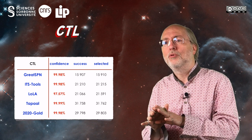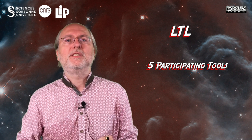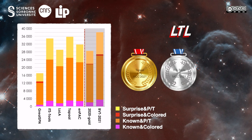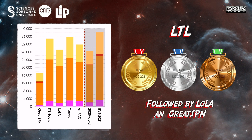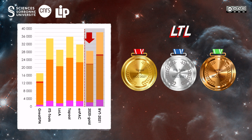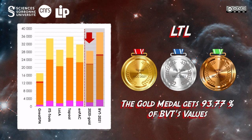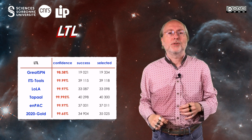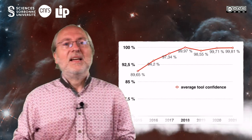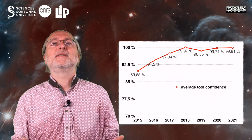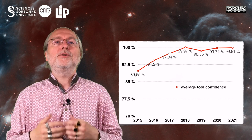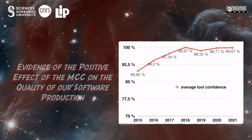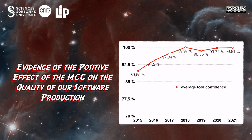For the LTL family of examinations, five tools did participate. The gold medal goes to TAPAL for its first participation in this examination. Then ITS-Tools grabs the silver one, and LPAQ gets the bronze medal, followed by Lola and GreatSPN. The 2020 gold medal was an ITS-Lola hybrid — made of the front end of ITS-Tools and the back end of Lola — and would have been out of the podium. No tool competing this year reached 100%; however, most of them are over 99%. Looking at the chart of average confidence rate since this metric was introduced in 2015, it globally increases — evidence of the positive effect of the model checking contest on the software production of our community.